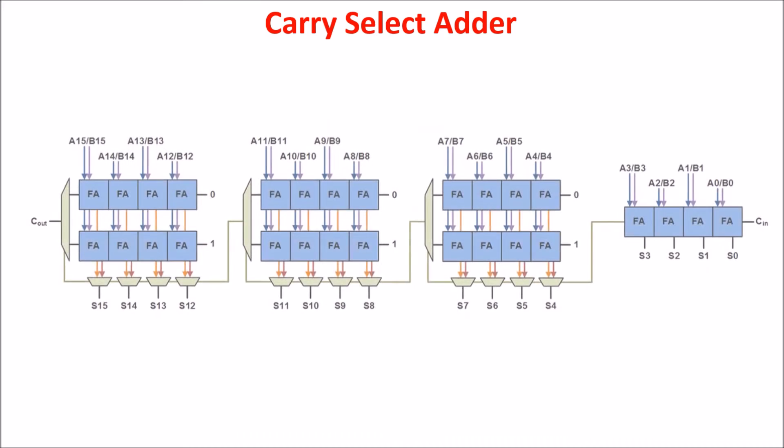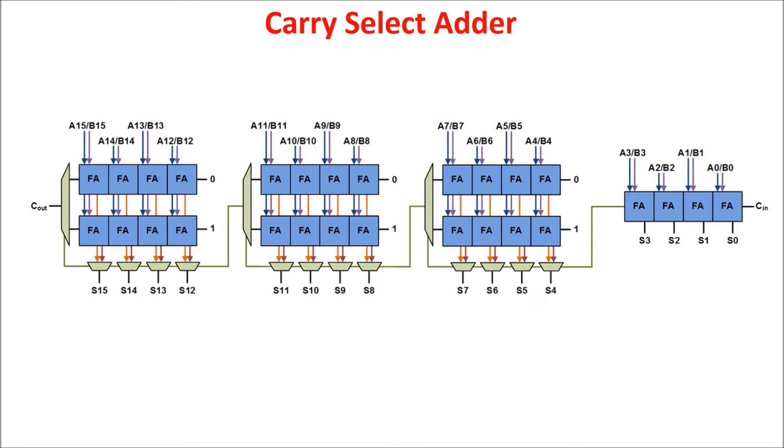Till now we don't see any advantage with respect to the delay of the ripple carry adder, but let's see a 16-bit adder built in this way. The first block is a 4-bit ripple carry adder, but from the second block on, we see the carry select block.